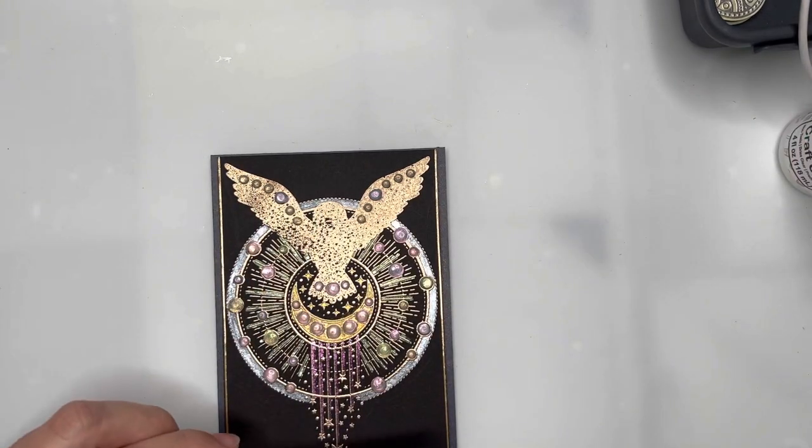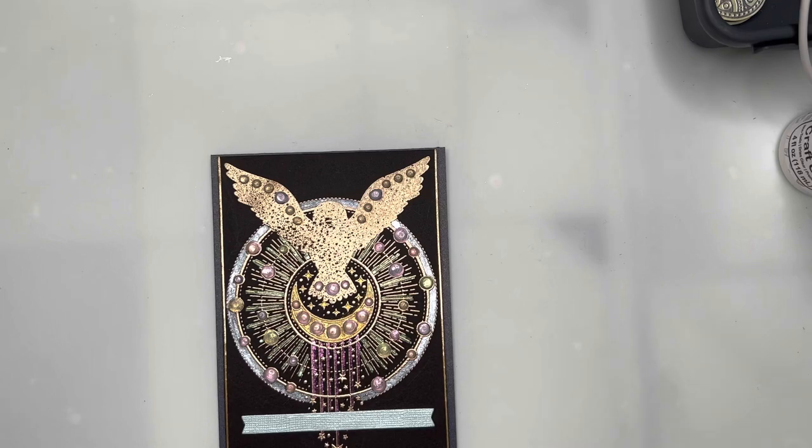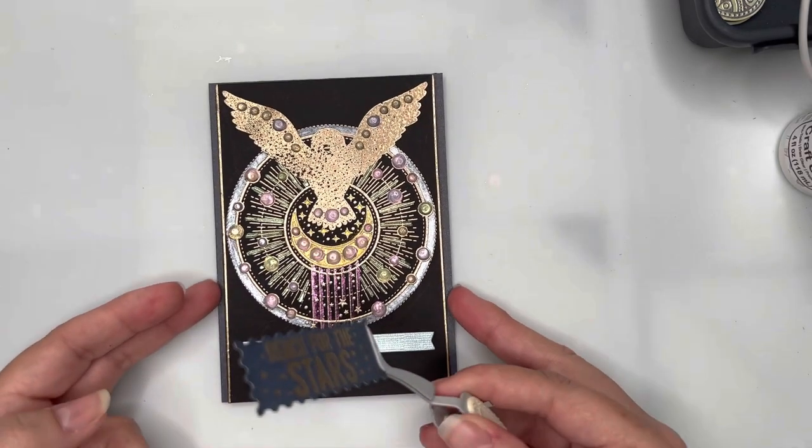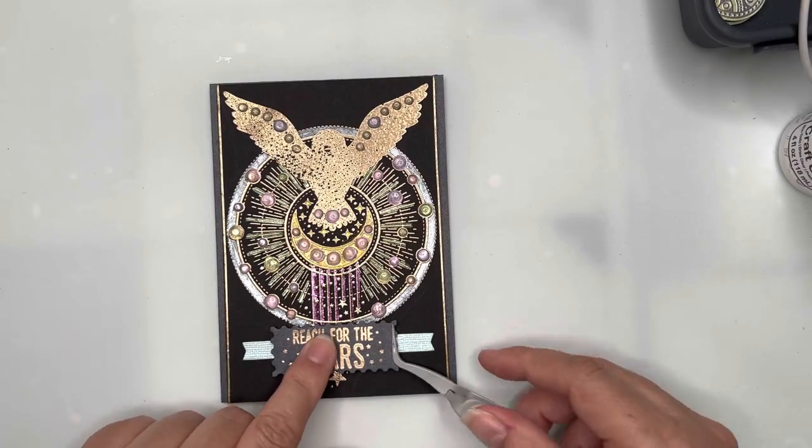To help that stand out from the black background, I'm using some of that light blue pearlescent cardstock and I've cut myself a little rectangle with fishtailed ends. Now I can go ahead and attach my sentiment over the middle of the little panel and that card's finished ready to go.